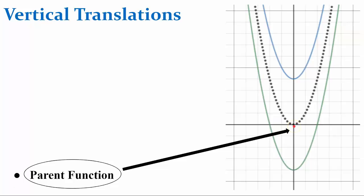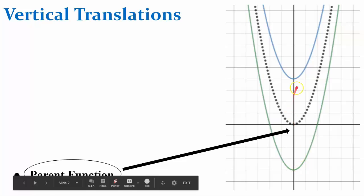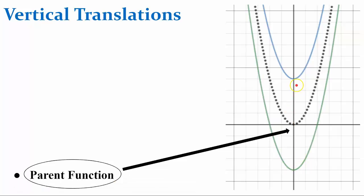All of the functions that we talk about today are going to be vertical translations of this function, and they're going to be vertically translated or shifted up or down the y-axis. So they all will have the same axis of symmetry, the line x equals 0. The vertex will be changing — it will be translating up or down on the y-axis.